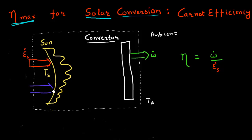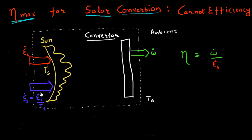I'll represent the entropy flux in blue. This entropy flux is at minimum given by the energy flux divided by the temperature — in this case, the temperature of the sun. The second law of thermodynamics states that whenever I'm doing this energy conversion, there must be a net generation of entropy taking place in the process, and this entropy generation must always be greater than or equal to zero.